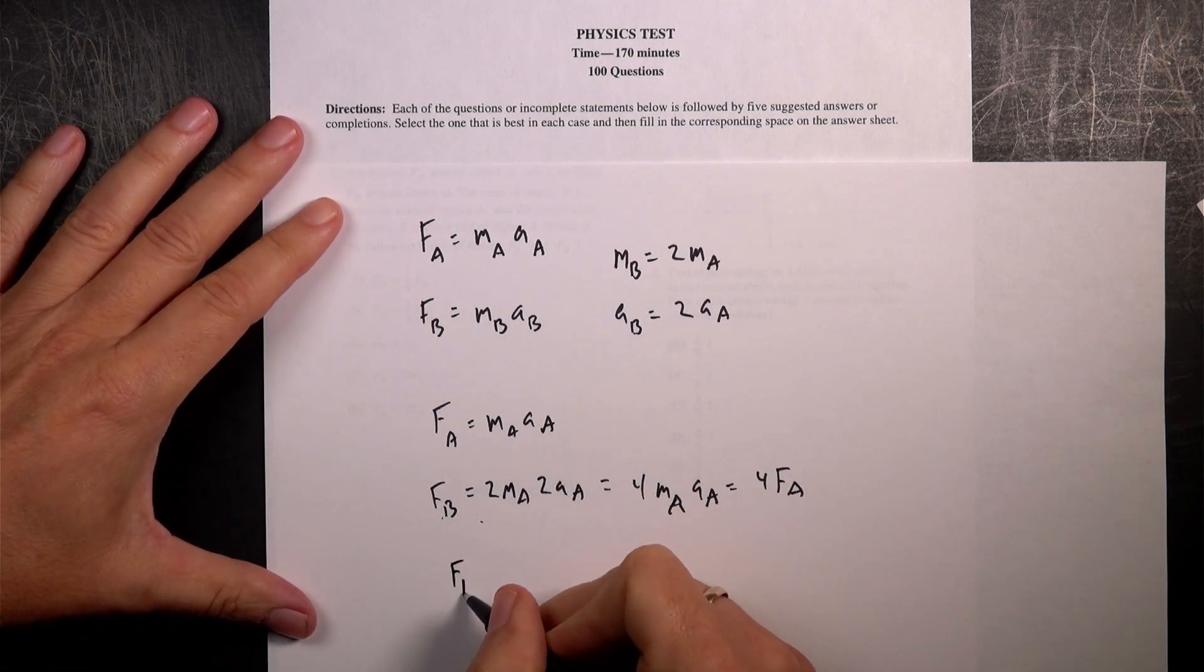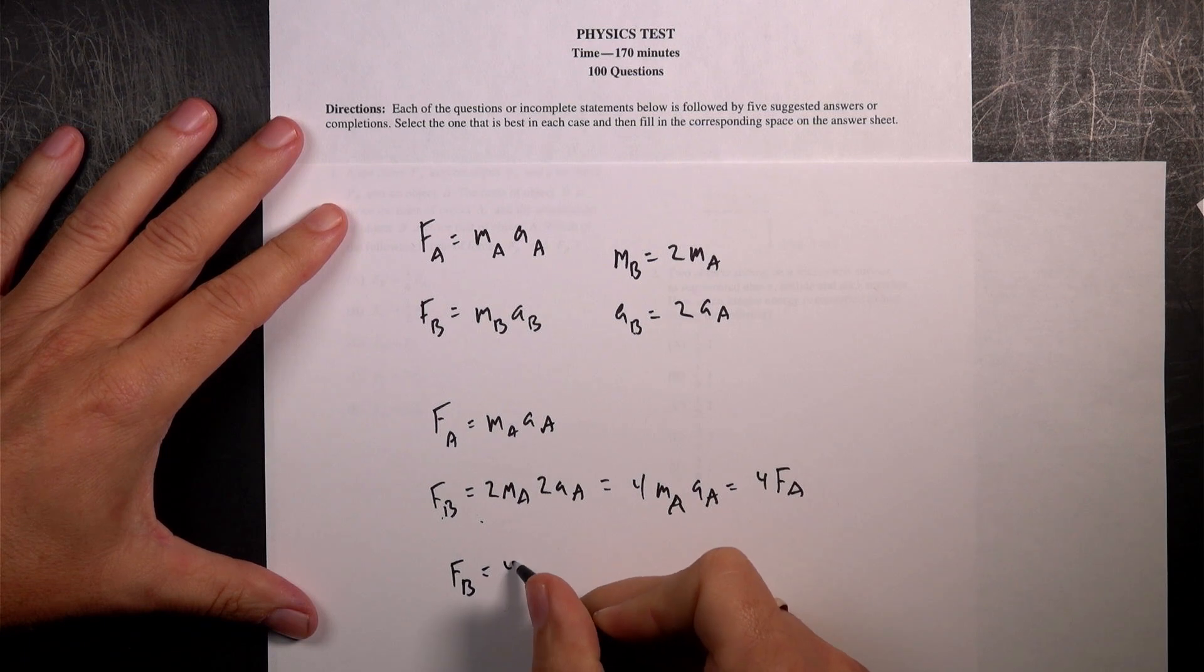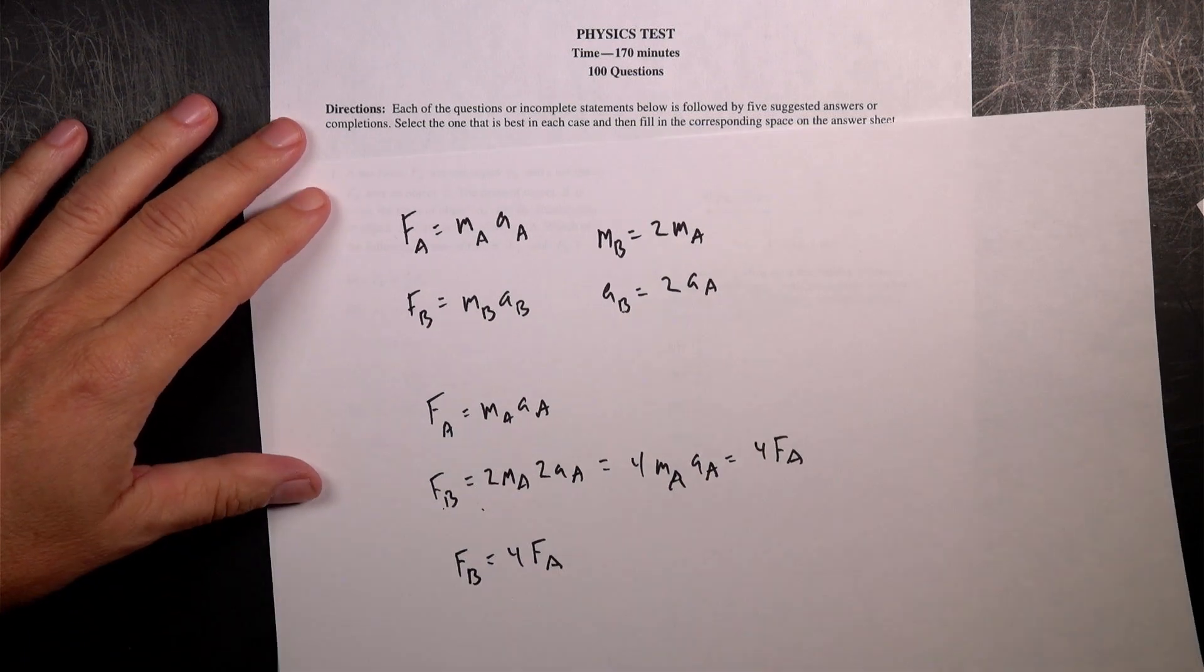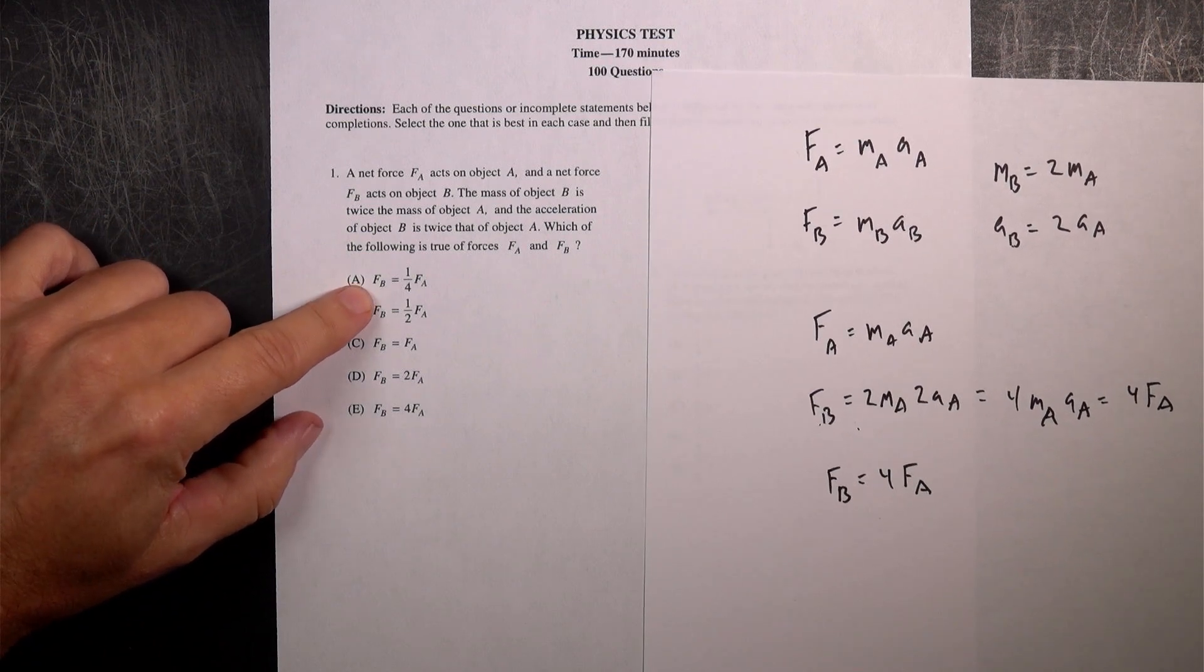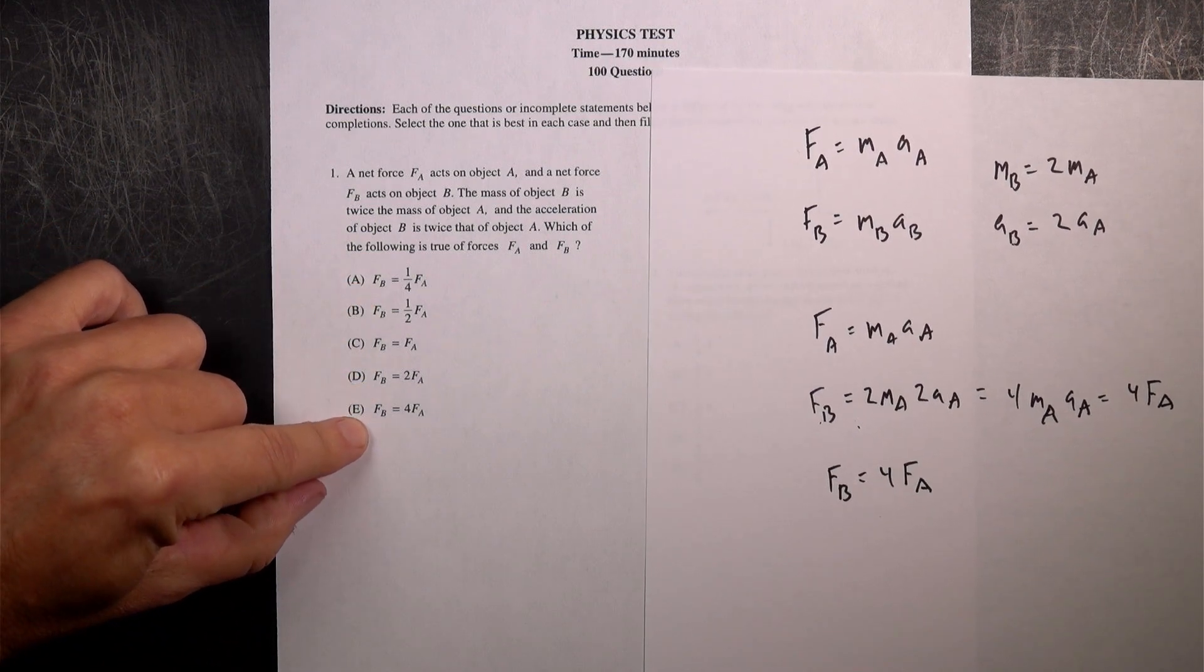I get FB equals 4FA. I think I did that right. So which of the following would be true? FB is 4FA. It's right there.